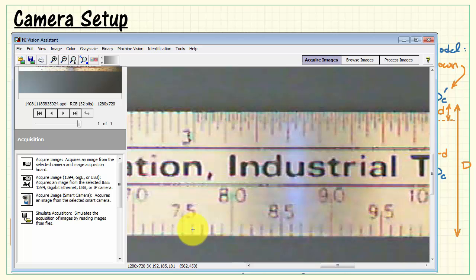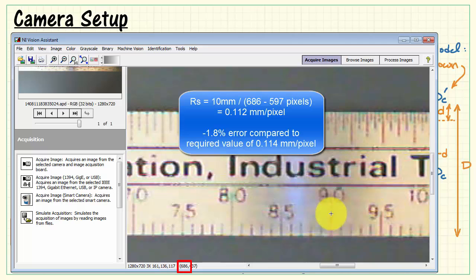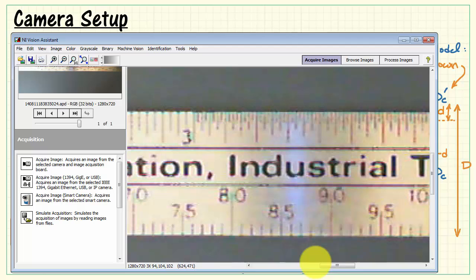You could also try repeating this for a different millimeter value. I'll also try this out for 10 millimeter span. Looking at those two coordinates again, taking the difference, come up with 0.112 millimeters per pixel. That's an error of minus 1.8% compared to the target value of 0.114 millimeters per pixel. So it looks like the calculated distance, D, worked out nicely based on the equations.